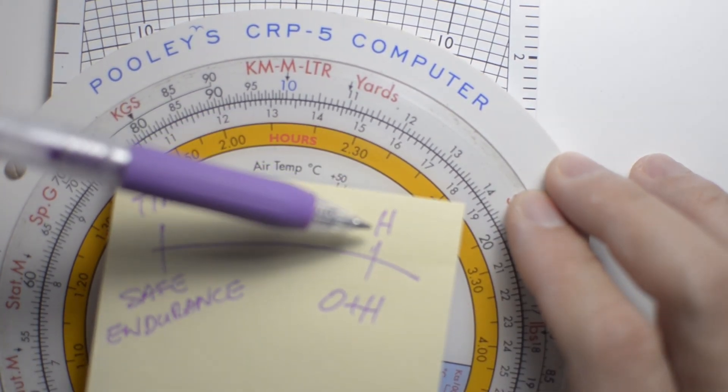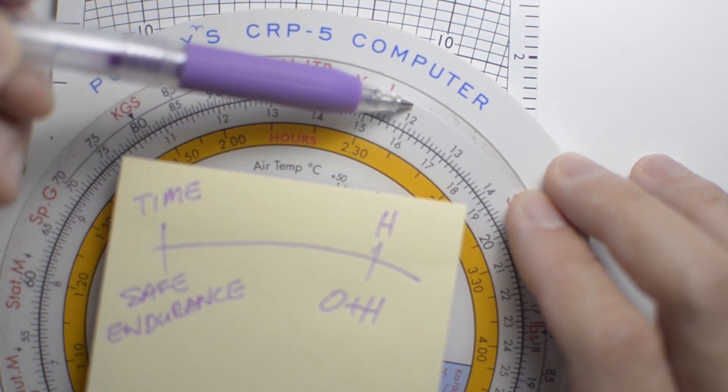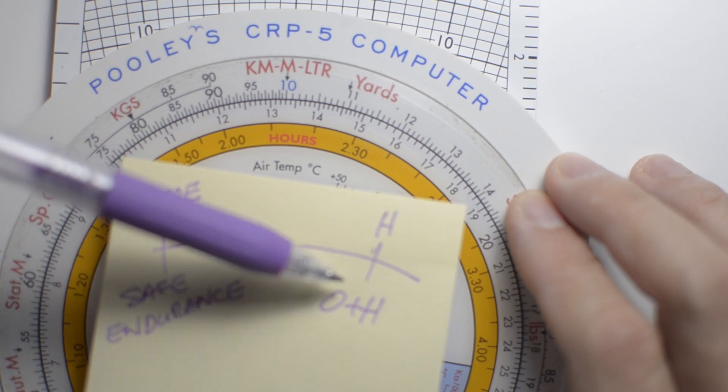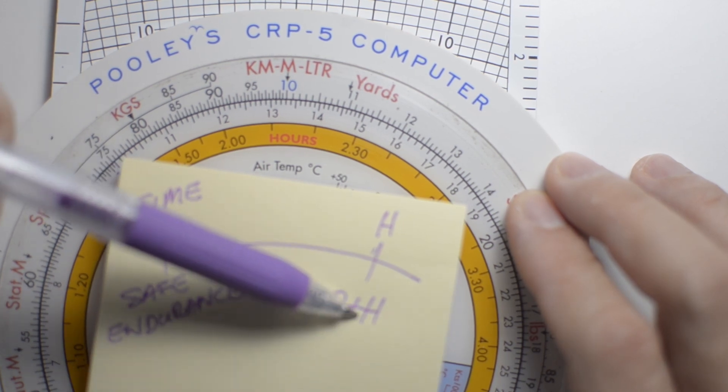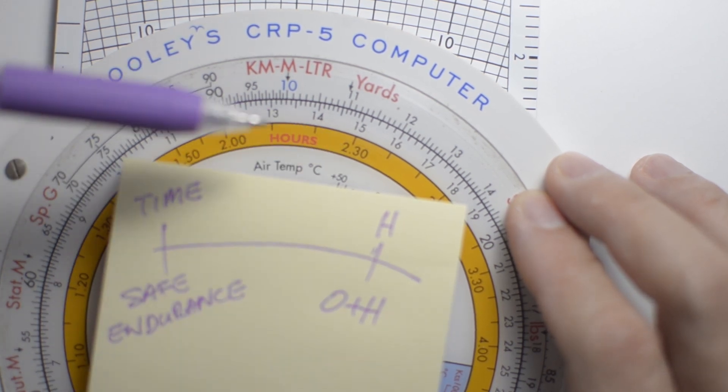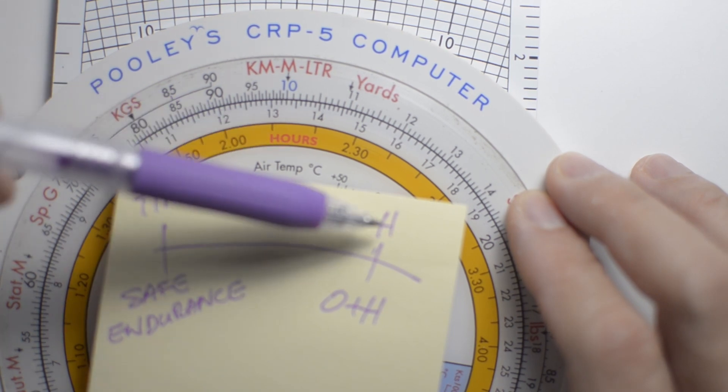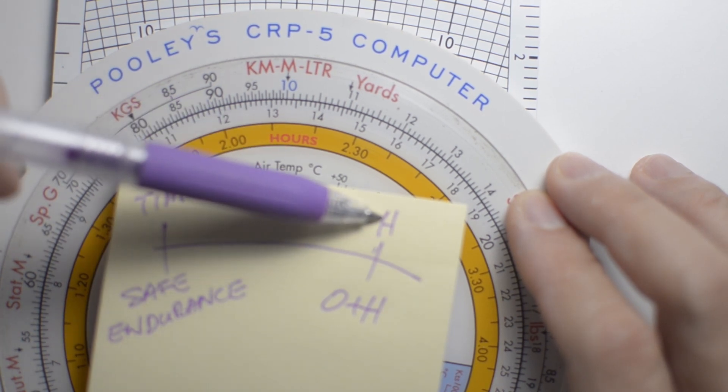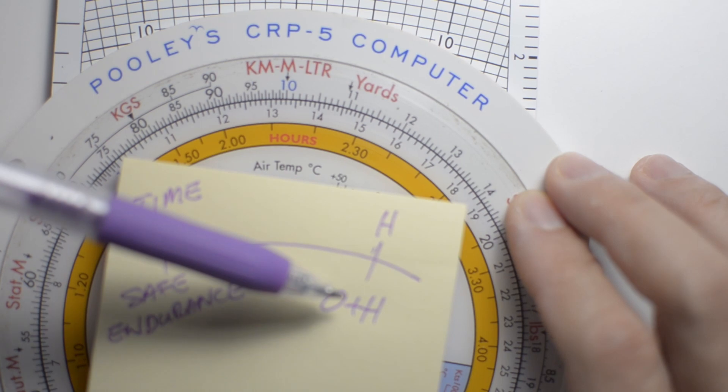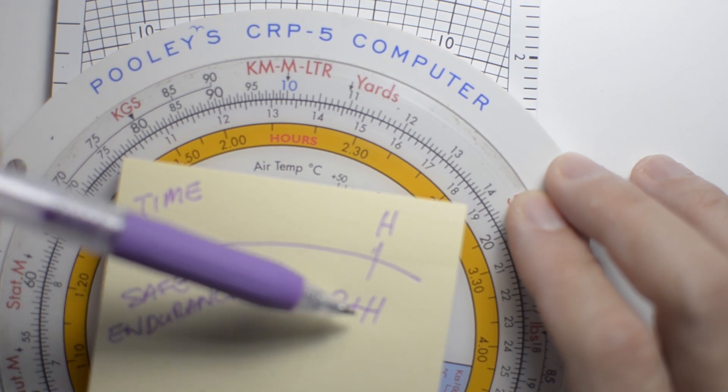So we're going to put ground speed home on the outer scale, and we're going to put the sum of the ground speed out and the ground speed home on the inner scale, and we're going to line that up. And we had determined that the ground speed home is 350 knots, and the sum of both speeds is 600 knots.